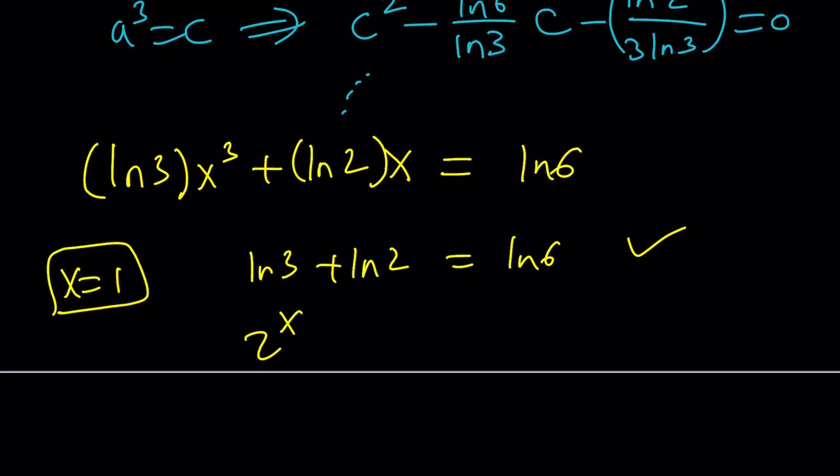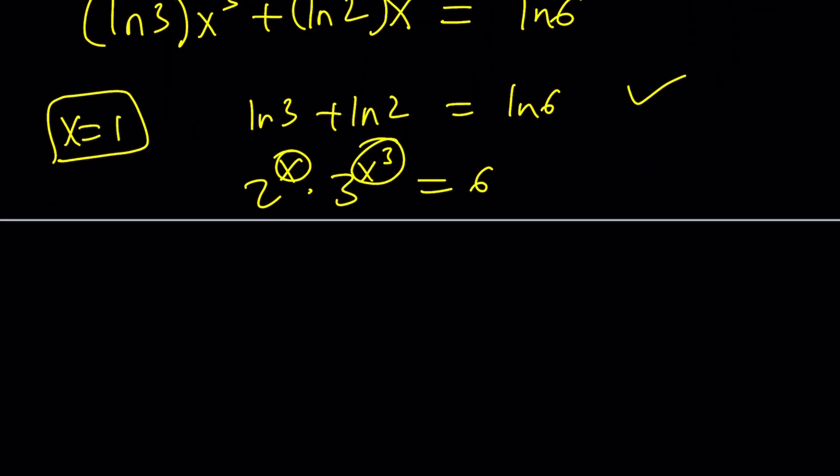Why is x equals 1 an obvious solution? Let's talk about it. If you replace x with 1, you get ln 3 plus ln 2 equals ln 6, which is true. So x equals 1 works. But how would you find it? Would you guess right away? Well, if you look at the original problem, I think it's kind of obvious that x equals 1 works, right?